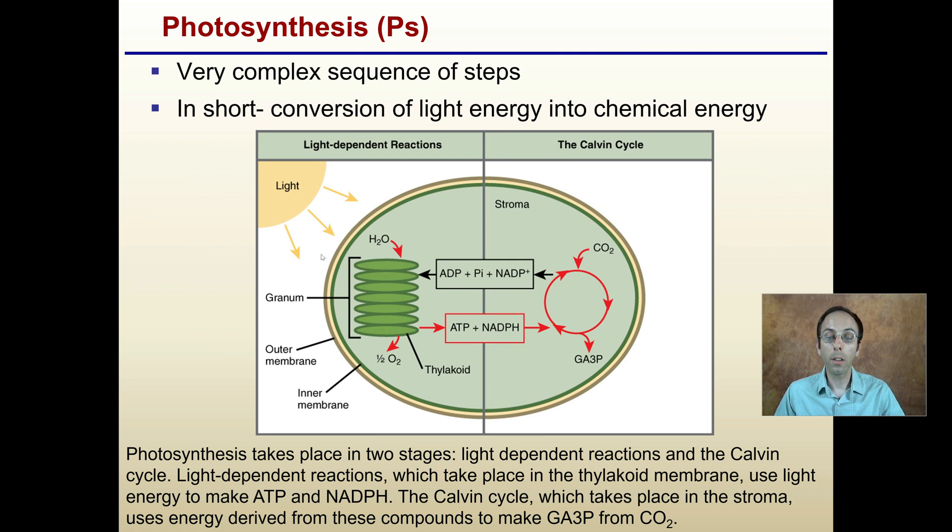The light-dependent reaction takes place in the thylakoid membrane and uses light, as the name implies, generating ATP and NADPH. Those energy molecules are going to the Calvin cycle, which takes place physically in the plant within the stroma, and it uses energy derived from these compounds to make GA3P, which will ultimately be made into sugars from the carbon in carbon dioxide.